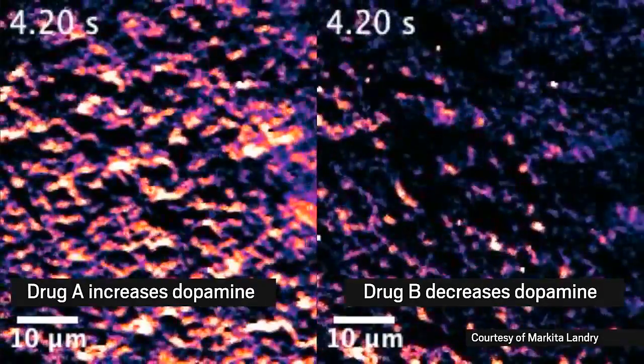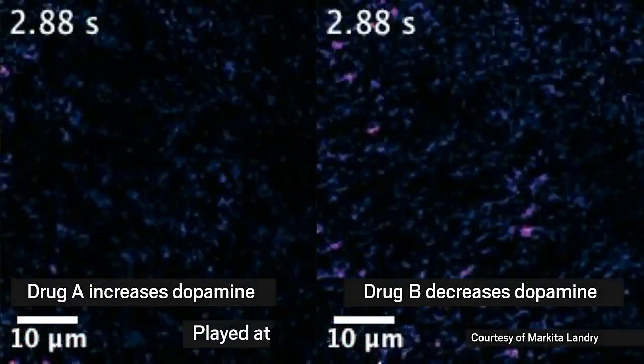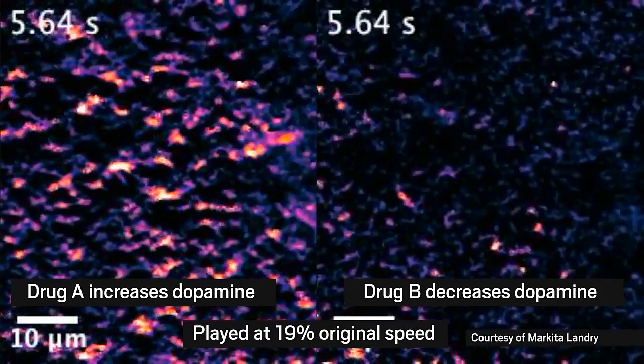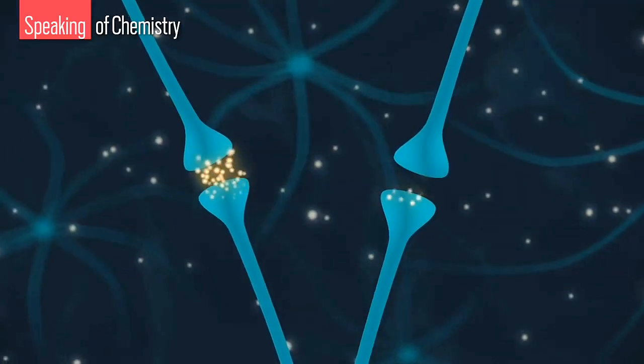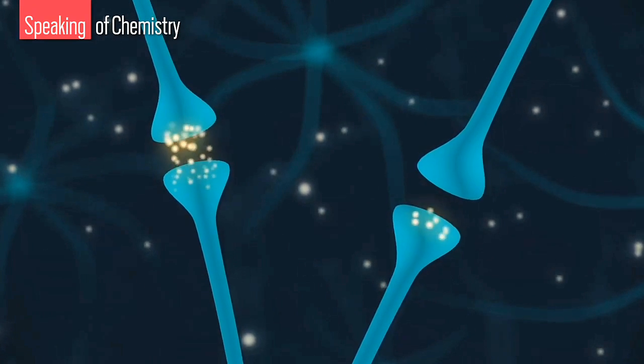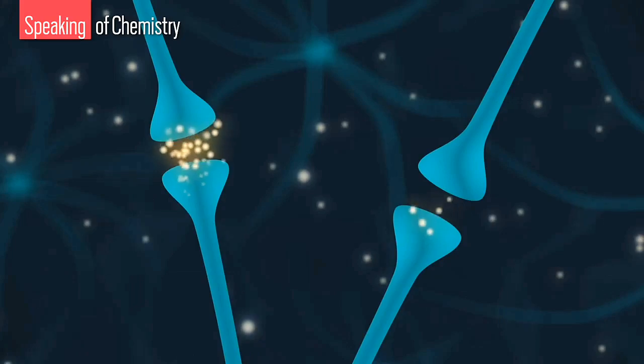If Markita and her team want to see how a drug would affect dopamine levels, they can dose their tissue samples with the drug and watch the sensor's response change. And the team noticed something interesting. When they used a drug designed to change dopamine levels, they found that not every neuron in a sample reacted the same way to the drug.